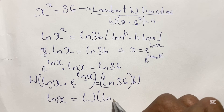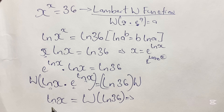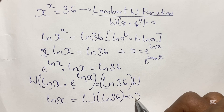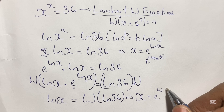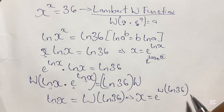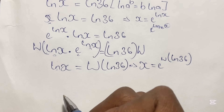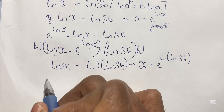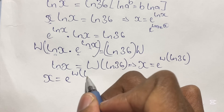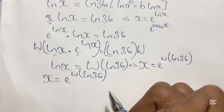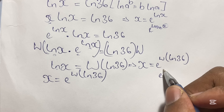So ln x equals W(ln 36). From here we continue to solve for x by taking the inverse operation of ln, giving us x equals e to the power of W(ln 36). Now let us evaluate this expression to find the value of x.